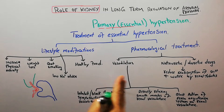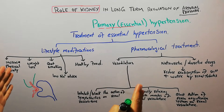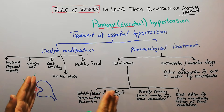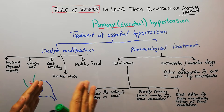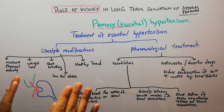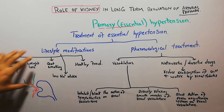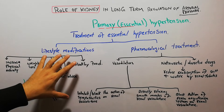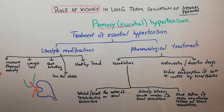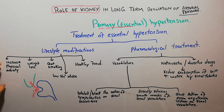These treatment options are from the physiology point of view; when we go into medicine we will discuss each in detail. The lifestyle modifications that can help in reduction of hypertension include, first, increasing physical activity.